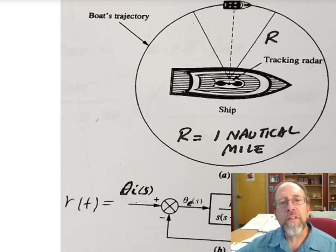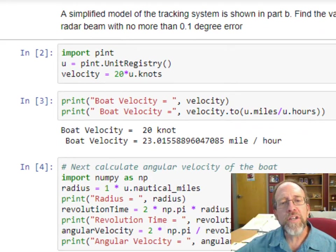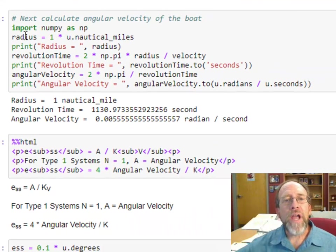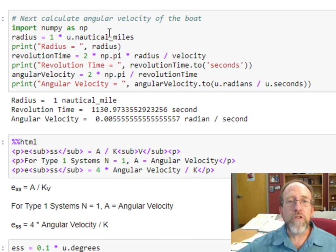Now as part of the problem, we're going to have to do some things here. Going back to the problem, we know that the radius of the boat that's circling the other boat is one nautical mile. I need to figure out how long does it take to do a revolution. I need to first bring in numpy because I'm going to be using some of the capability of numpy. I set up the radius to be one nautical mile. The revolution time is going to be 2 pi r over v. That's the circumference over the velocity.